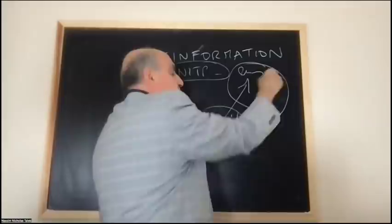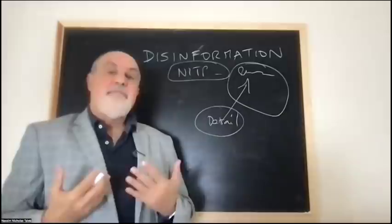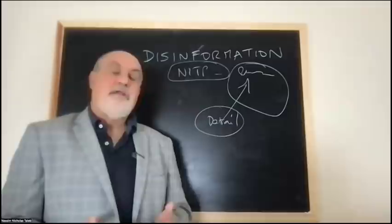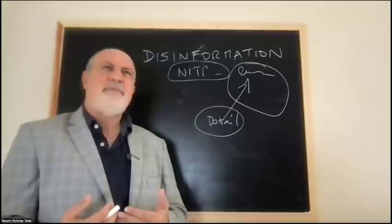And we are much more vulnerable to details, the salient details, something psychologists like Danny Kahneman called the representativeness heuristic.